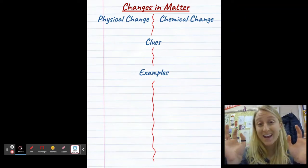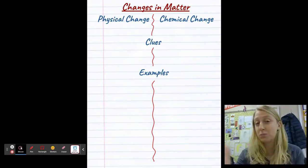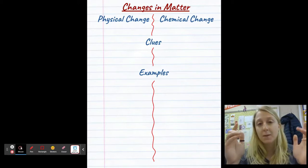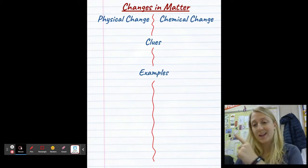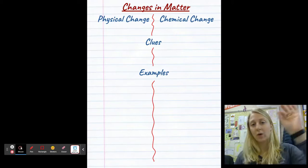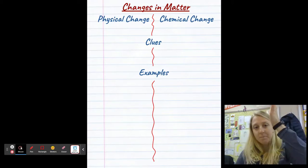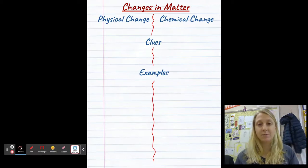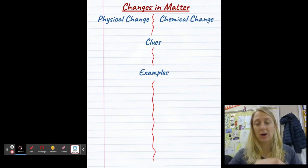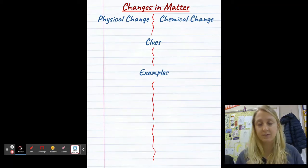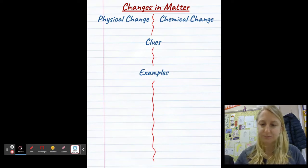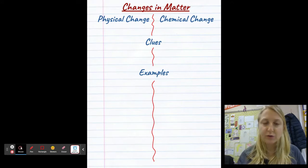So first things first, let's take a page in your notebook. This should probably all fit onto just one single page in your notebook and make it look like that right there. Make it look like that, where you've got the changes in matter written up at the top. Put a dividing line down the middle of the page where we've got physical change on one side, chemical change on the other, a little section where we're going to write some clues for both of those and examples for both of those. I obviously use different colors. Use them if you got them. If you don't, that's fine too. You can do it all in one color and it'll be just fine. I'm going to go through this quickly. Pause me as needed.